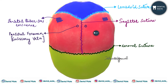Two parietal foramina are seen, one on each parietal bone, present just adjacent to the sagittal suture. An emissary vein passes through the parietal foramen. This is a valveless vein which connects the extracranial veins to the intracranial veins.